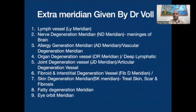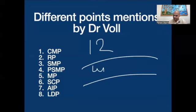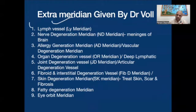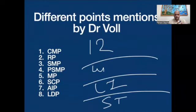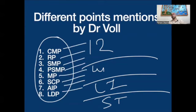These are the 9 meridians given by Dr. Bohl — like the lymph, nerve degeneration, and all. Now in every meridian, whether the 12 acupuncture meridians like lung, large intestine, stomach, and spleen, or the 9 new meridians given by Dr. Bohl — in each and every meridian, these are the points given by Dr. Bohl. So today we are going to discuss a little bit about these points and what is their meaning.